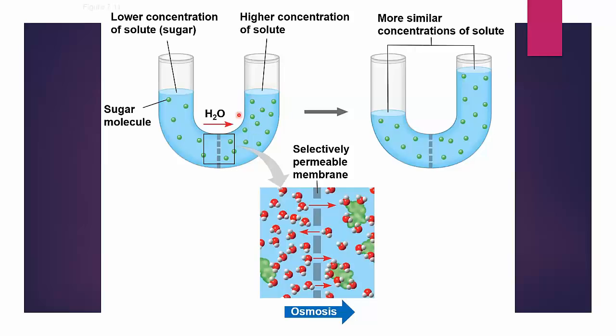There's more solute, a high concentration of solute on the right, and a low concentration on the left. Now in this case, we also have a membrane, but the membrane in this example is too small for the solute to pass through. And what happens is the water molecules are in motion. They can cross the membrane, but the dissolved solute cannot.